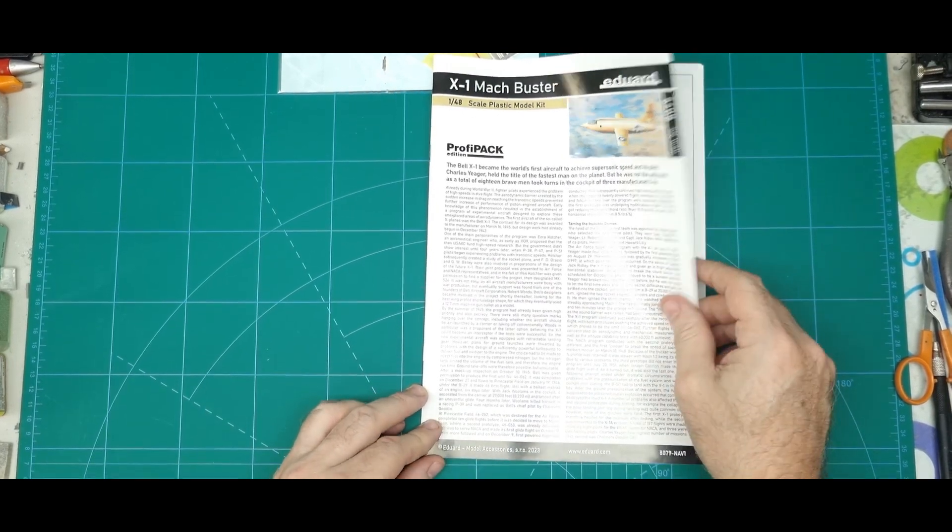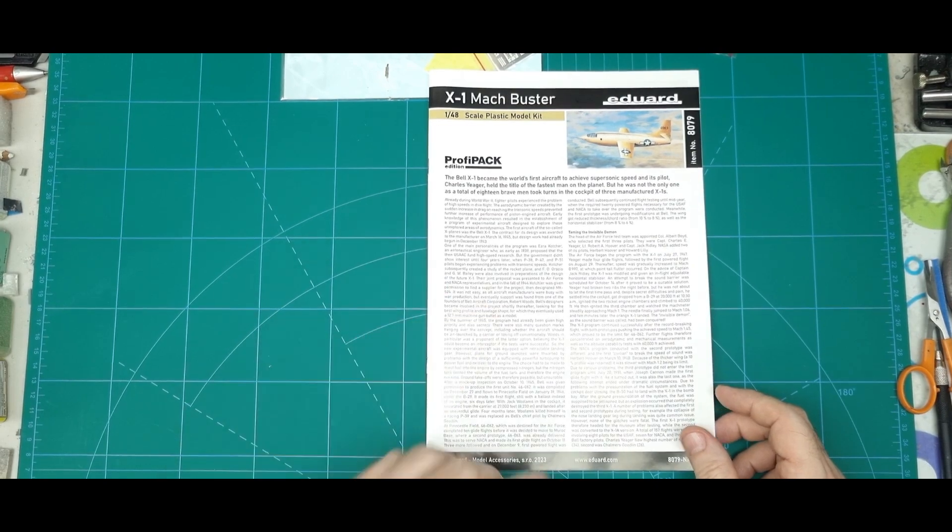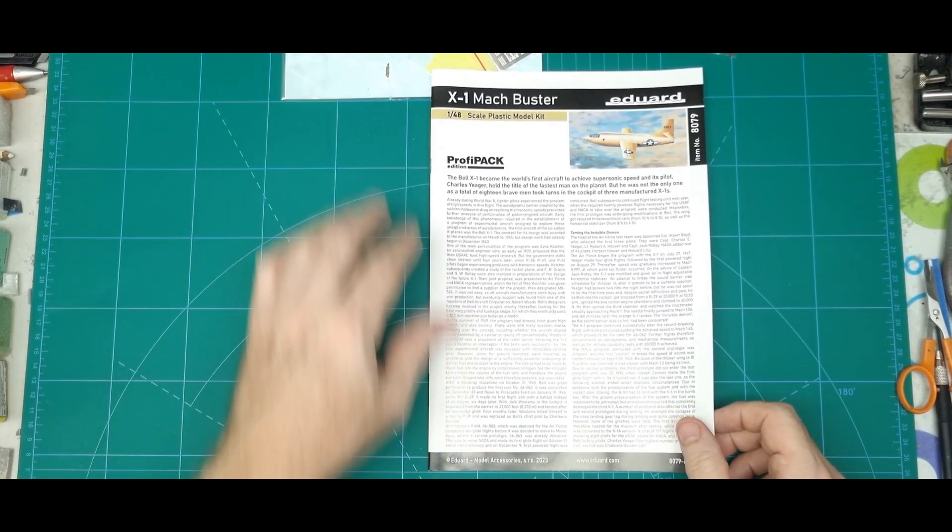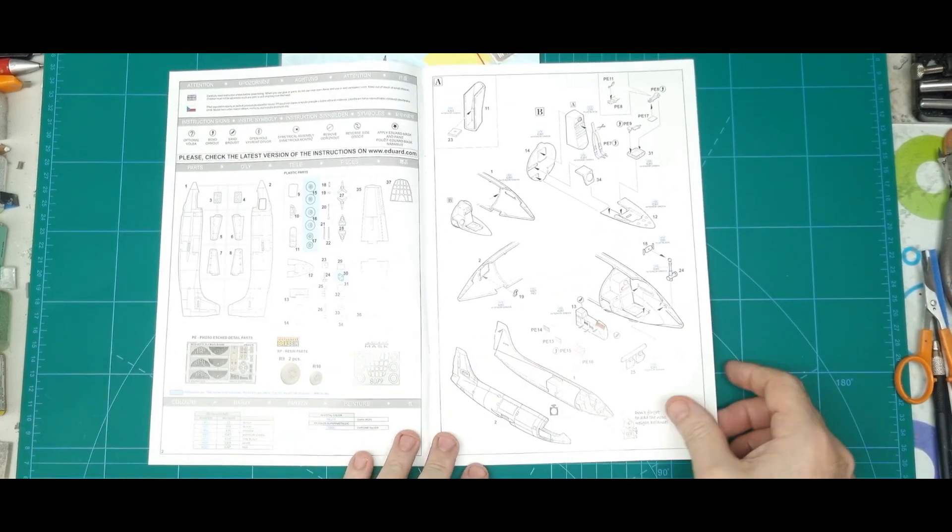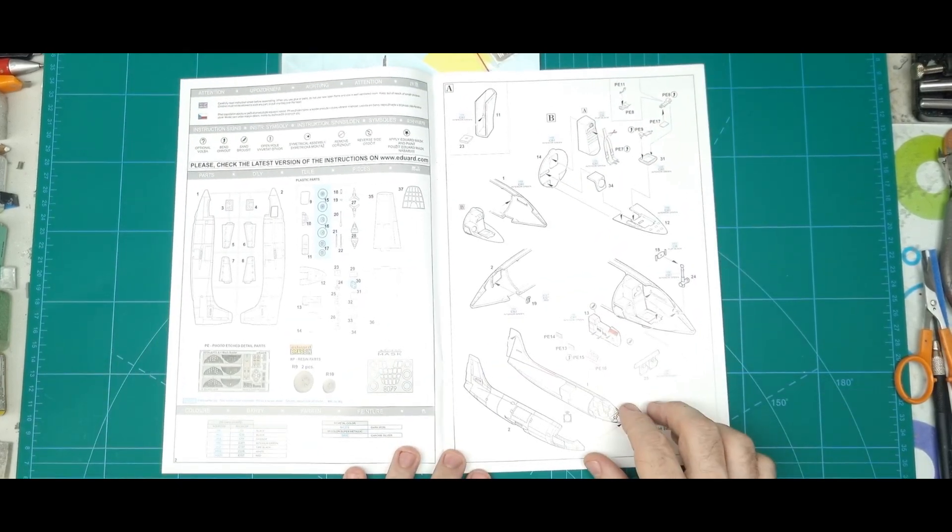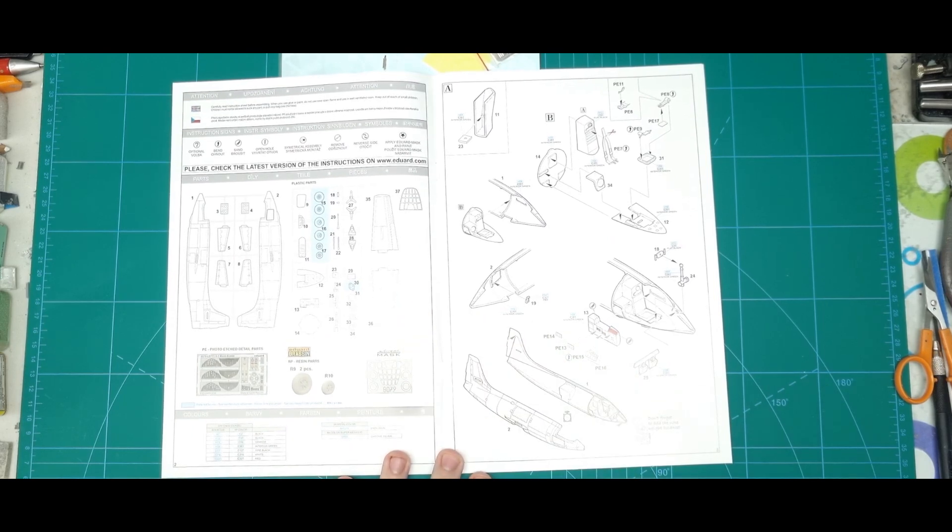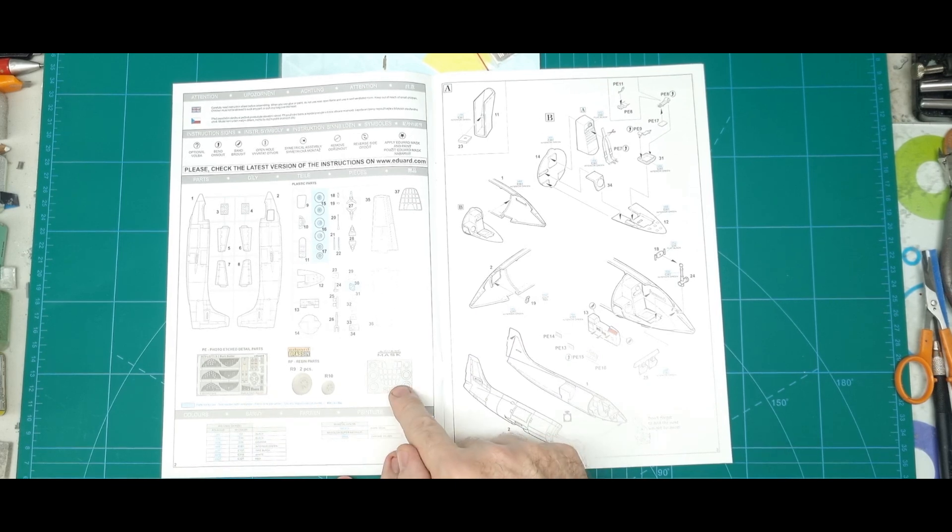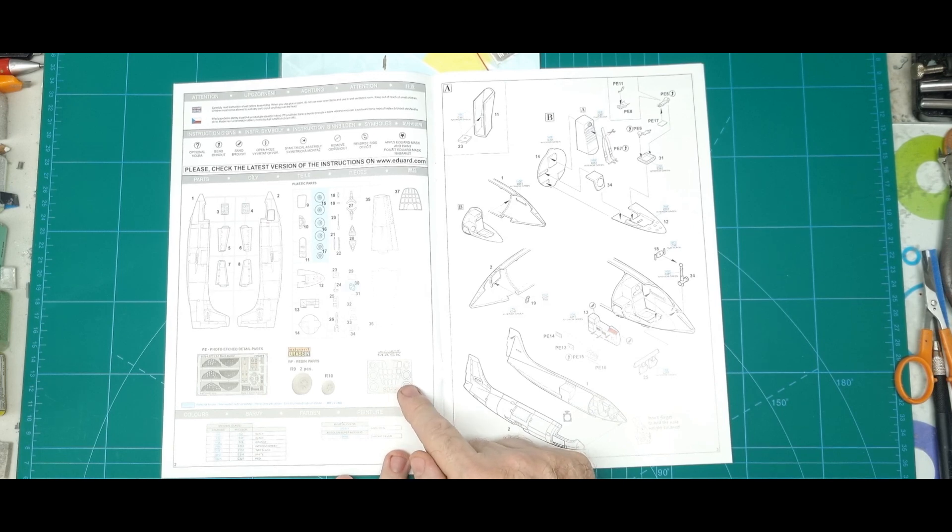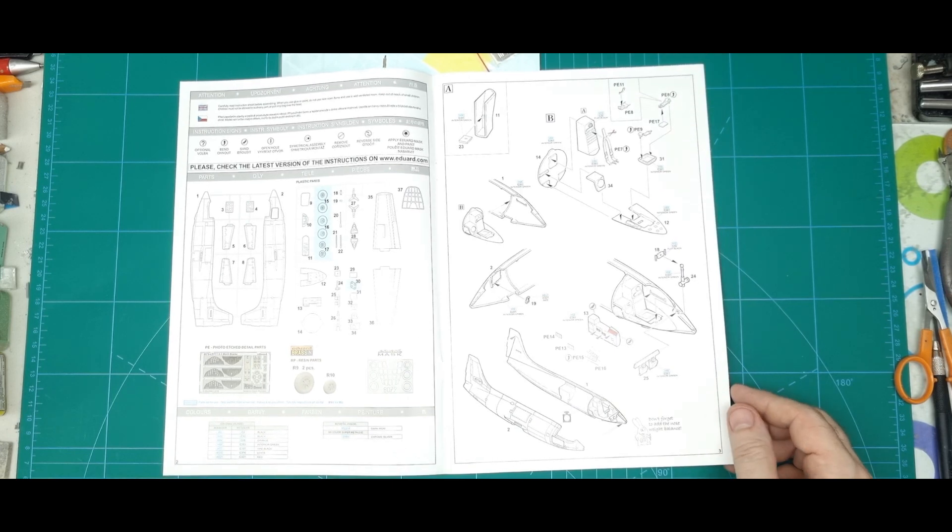So we got the history of the aircraft, because one of the schemes I think is for Chuck Yeager. So your sprue trees, the photo etch and some resin wheels, mask set, which is probably a nice touch considering the windscreen in the aircraft.